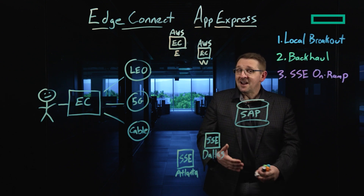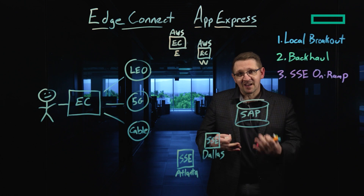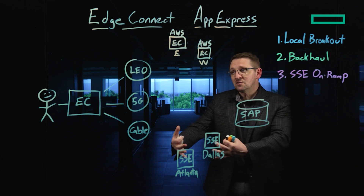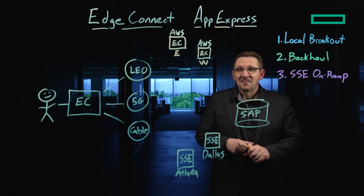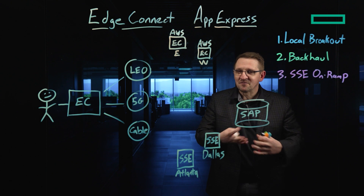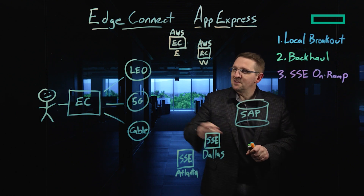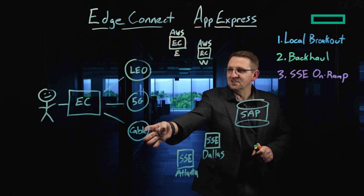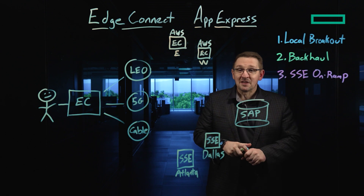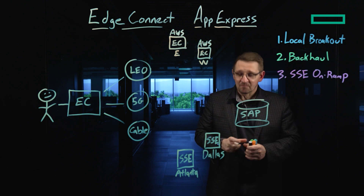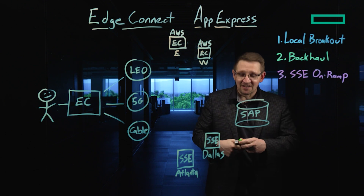The main idea is that we provide multiple internet connections to the SD-WAN device, and then it figures out through a variety of different mechanisms which one of these connections provides the best connection to the SAP server. Now let's talk about how it does that.